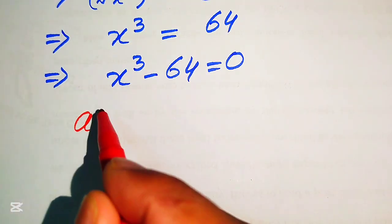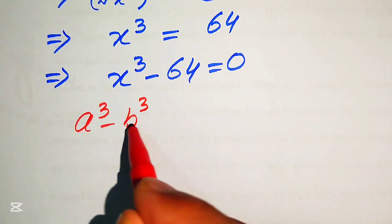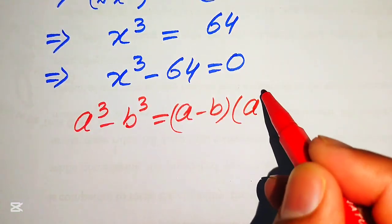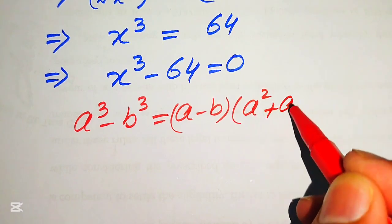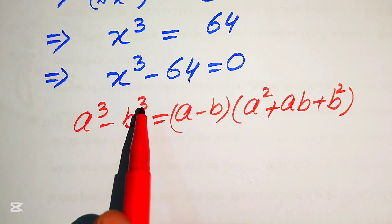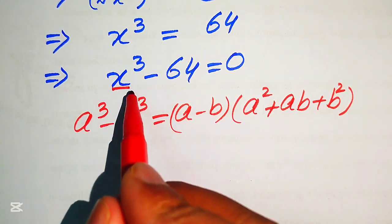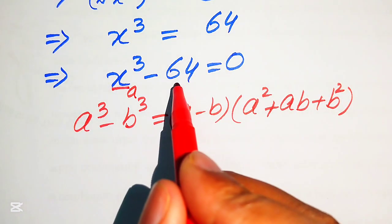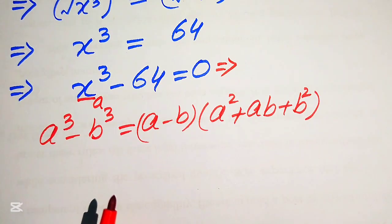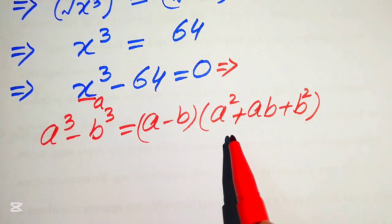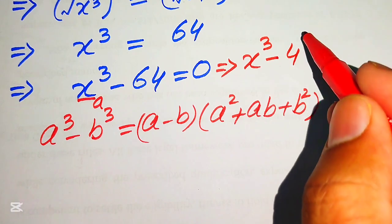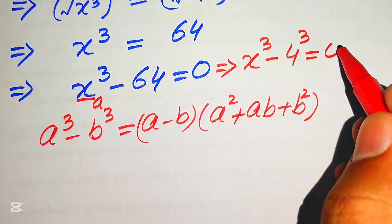We know that a cubed minus b cubed equals (a minus b) times (a squared plus ab plus b squared). According to this cubic formula we can solve this equation. We know that 64 equals 4 cubed, so we rewrite this equation as x cubed minus 4 cubed equals 0.